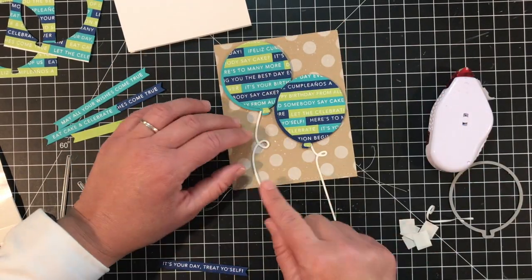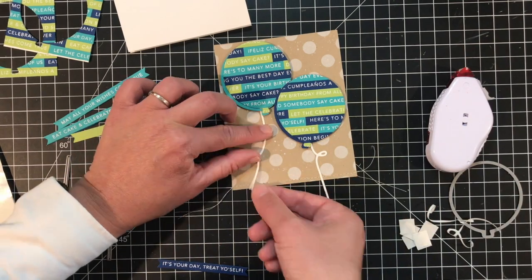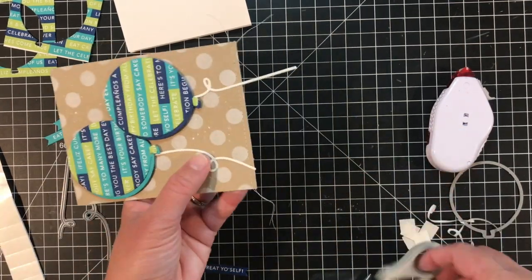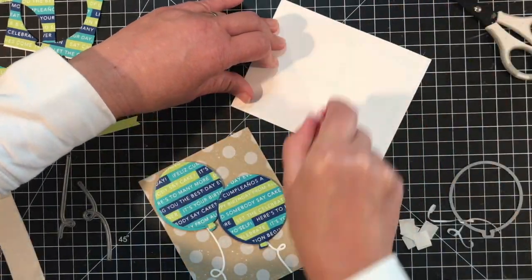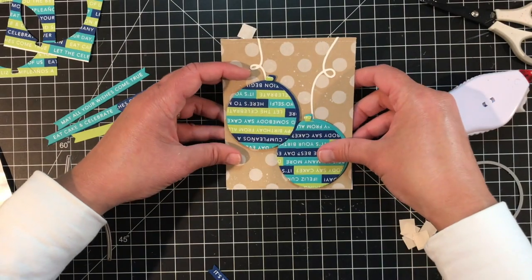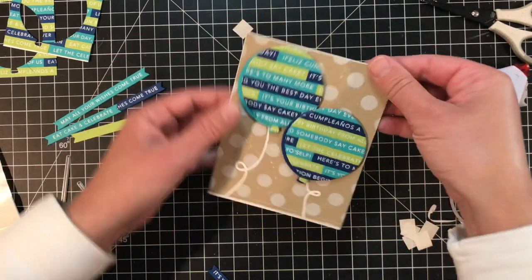I'll peel the paper backing off of the balloon strings from the stick it and then I'll attach these to the card background tucking the ends under the balloon so they look like they're attached. I'll attach this to a sugar cube card base. I'll align the top edges of both pieces so just a little bit of sugar cube peeks out at the bottom of the card.